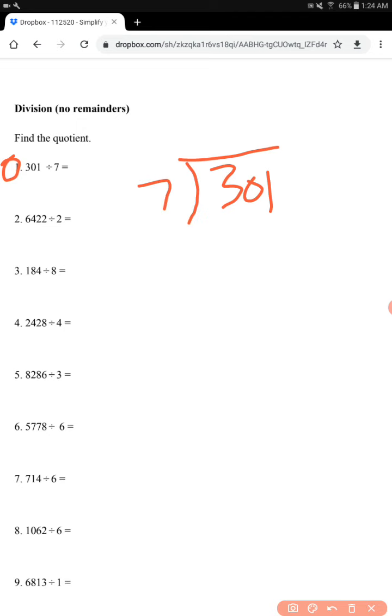Divided by 7. So 7 can go into 30, 4 times, since 4 times 7 is 28. Then you subtract, and you're left with 21. And 7 can go into 21 exactly 3 times. So the answer is 43.